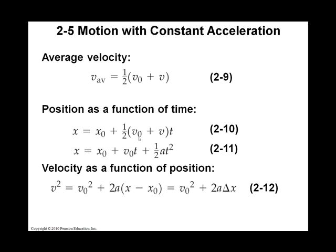We can combine the equation that says final velocity squared equals initial velocity squared plus 2 times a times x.